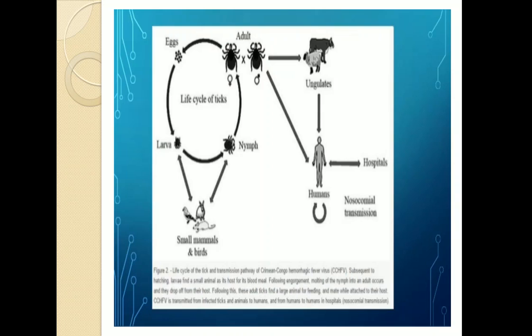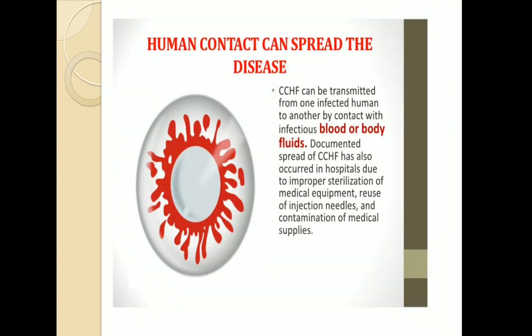In its cycle, ticks feed on small mammals or birds, larvae are produced, eggs are formed, and it converts into adult form, which is transmitted to cattle. While handling that cattle, the virus is transmitted to humans. Human-to-human contact can spread the disease through contact with infectious blood or body fluids. Documented spread of CCHF has also occurred in hospitals due to improper sterilization of medical equipment, reuse of injection needles, and contamination of medical supplies.